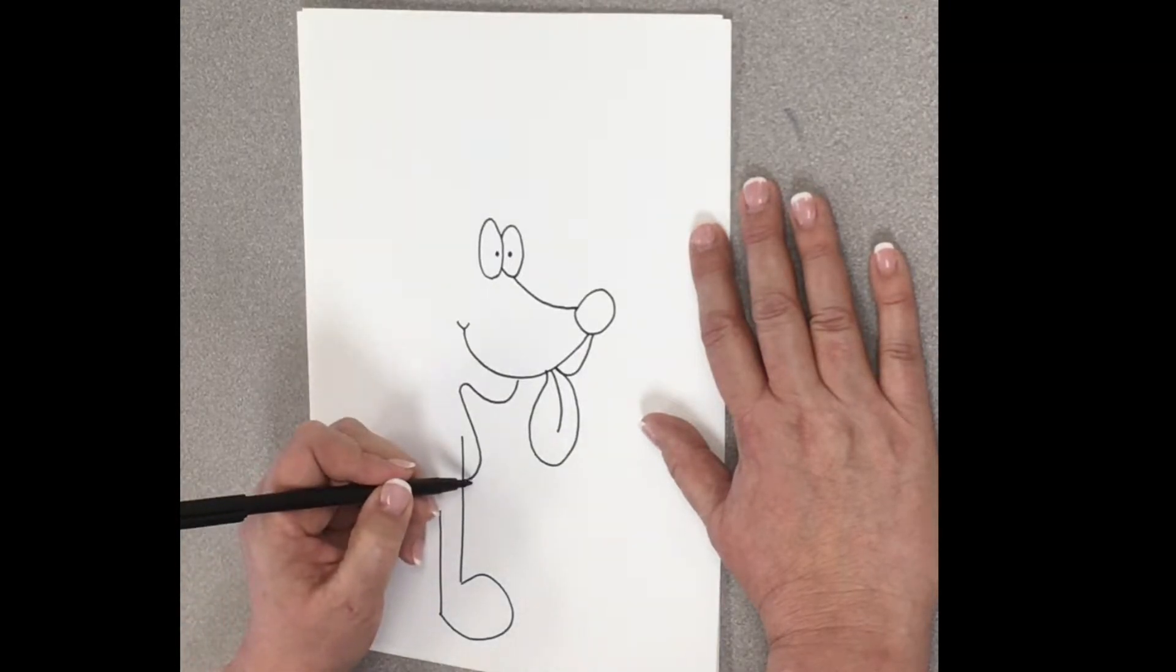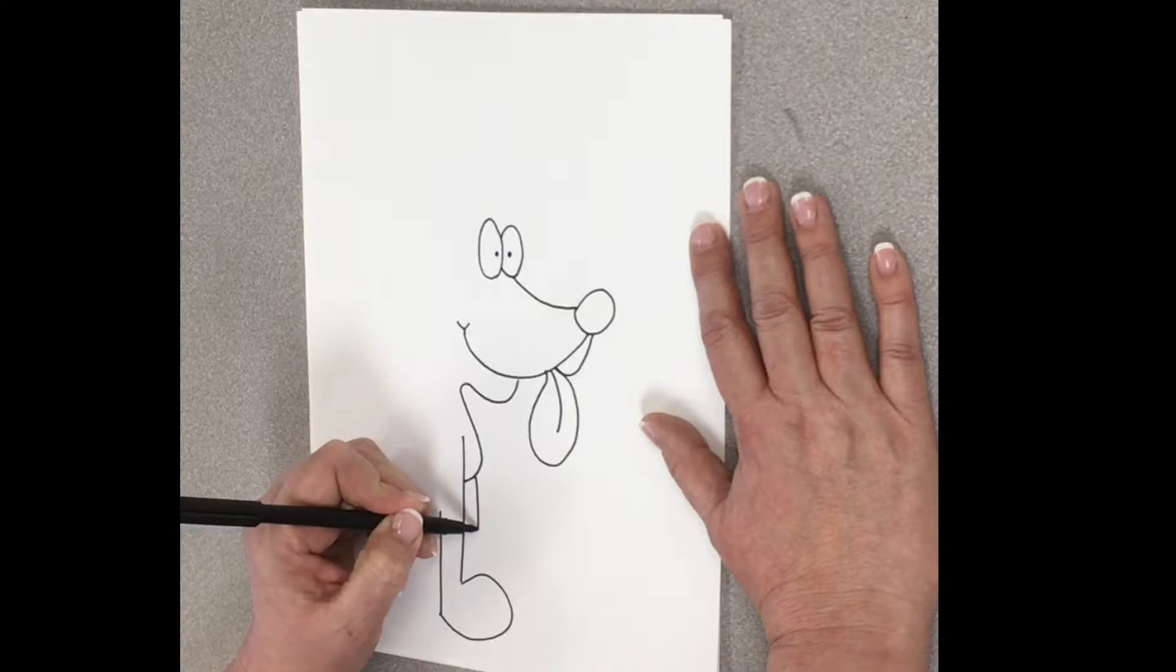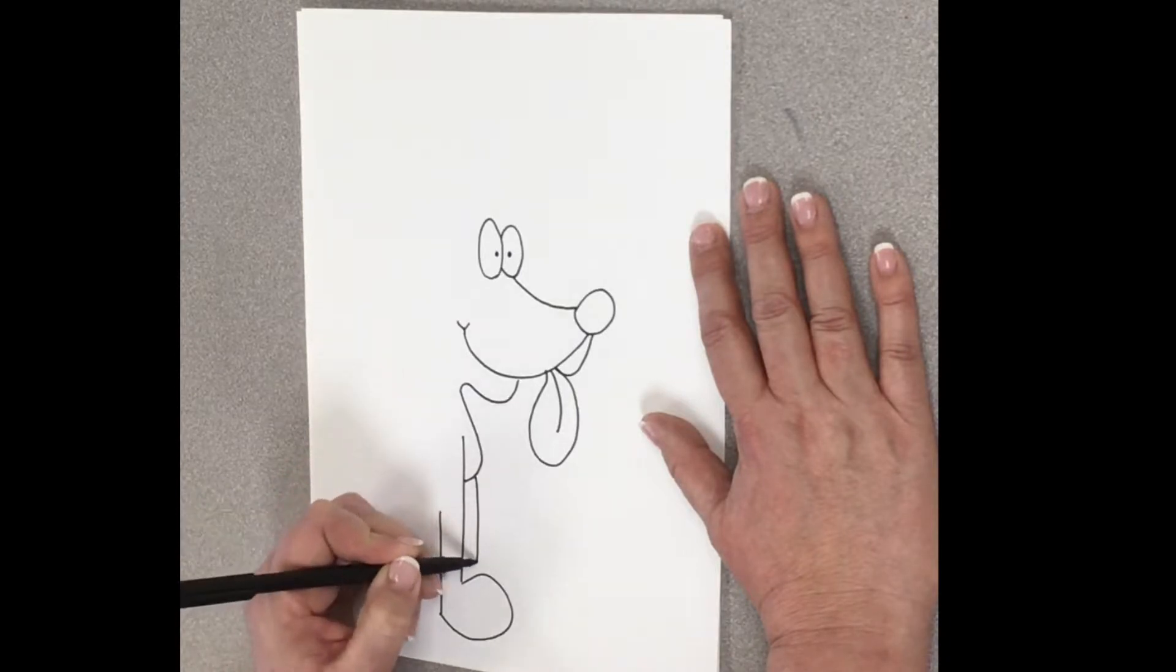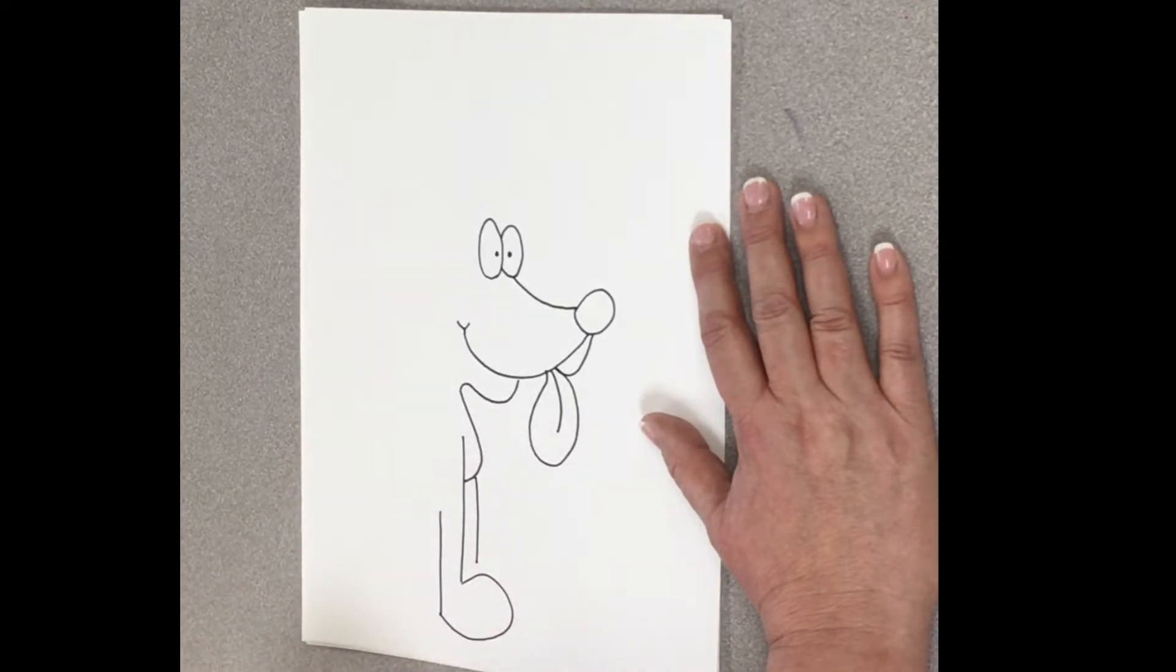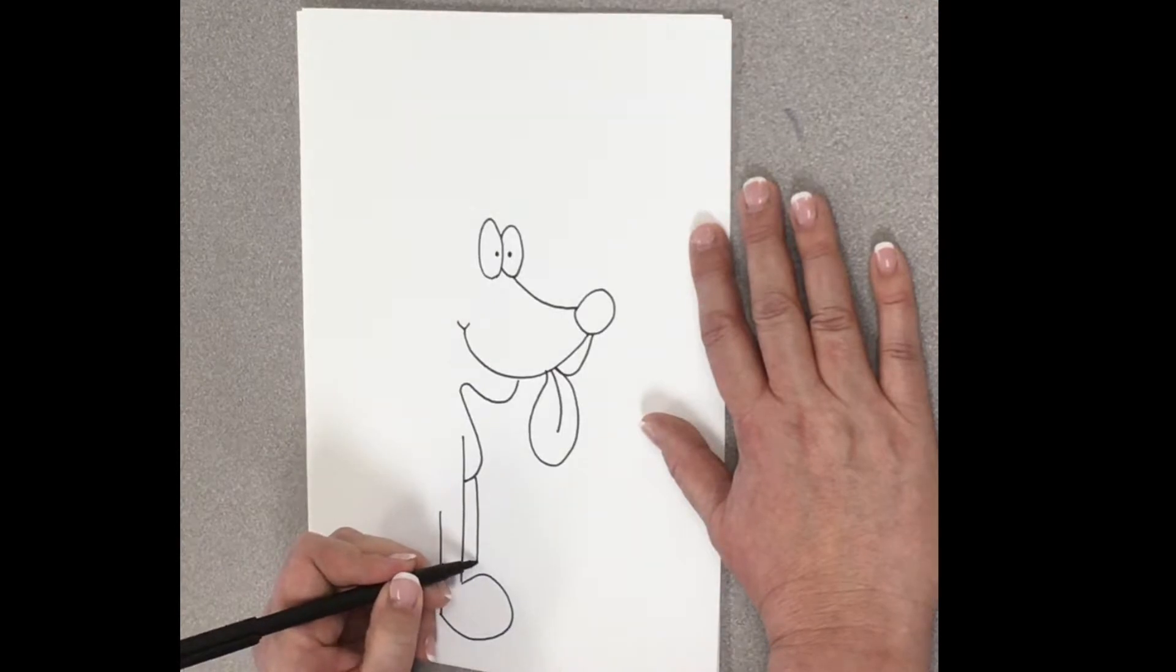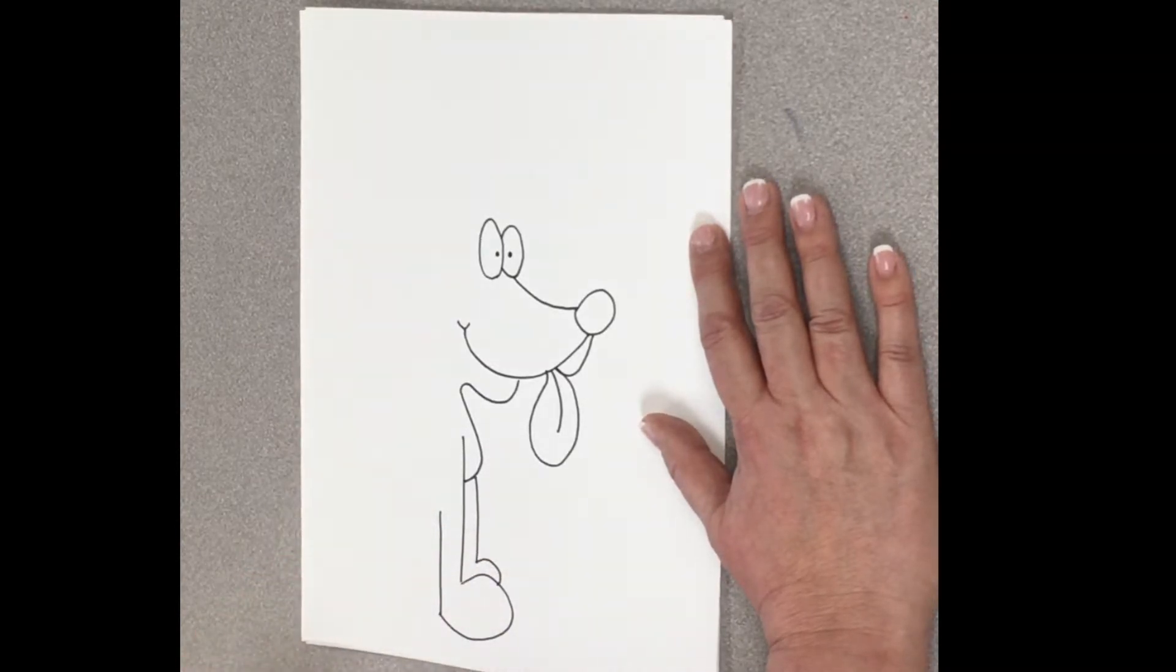And I'm going to drop another line down for the back of his paw. And then he's got to have a back paw. Because dogs have four legs. Unless they've been in an accident. I have seen some three-legged dogs.